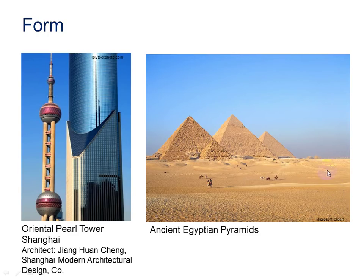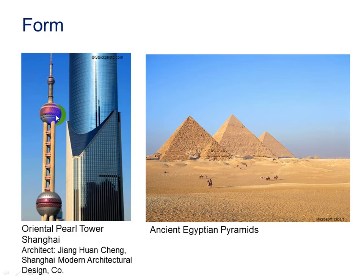The Oriental Tower, seen here on the left, is a television tower in Shanghai and includes 15 observatory levels and a revolving restaurant. Its design includes 11 spheres, large and small. The two largest spheres have a diameter of 164 feet and 148 feet. The design is based on the Tang Dynasty poem 'Pippa Song' by Bai Juyi, about the wonderful sprinkling sound produced by a Pipa instrument — sounding like pearls, big and small, falling on a jade plate.